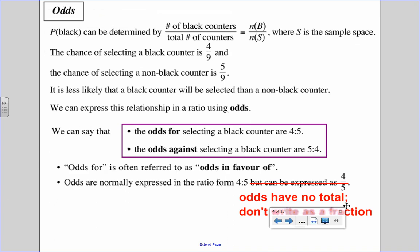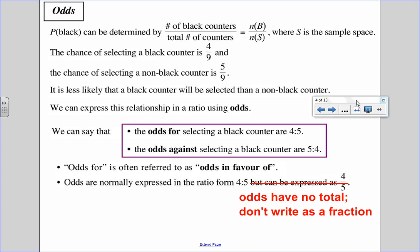Now let's compare that to odds. Okay, so probability is based on a total, the number of black counters divided by the total number of counters. So this is a probability, meaning it has a total. Odds, however, do not have a total.